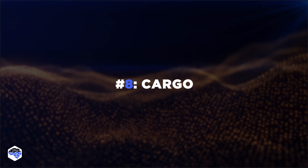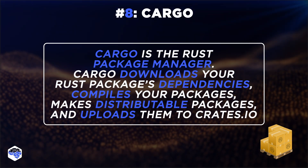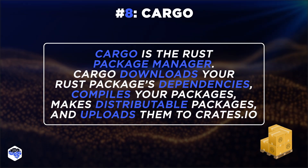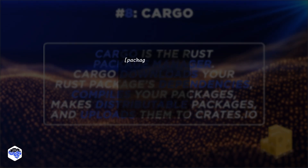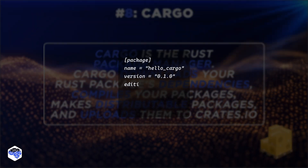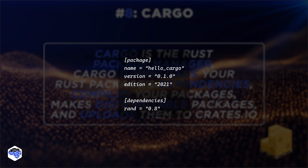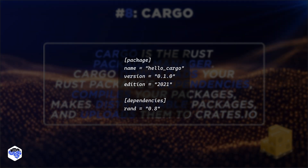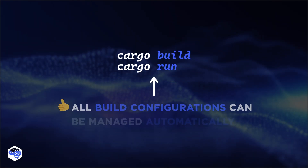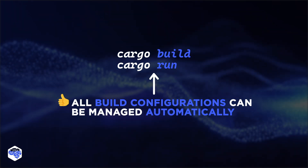Another must-know essential is Cargo, the package manager and build system. Cargo simplifies project management by handling build configurations, dependencies, and project sharing. By specifying rand = 0.8 in cargo.toml, Cargo automatically downloads and integrates the rand crate into your project, handling versioning and compatibility. With cargo build and cargo run, all build configurations can be managed automatically, allowing you to focus on coding.